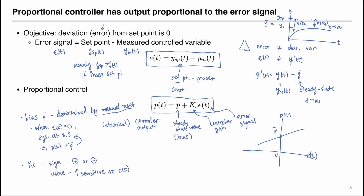We have been looking at the ideal proportional controller. However, realistically, if the error signal goes to infinity, the controller output would also go to infinity, but that is not realistic because the output is bounded by physical limits. If we redraw a more realistic proportional controller, it still has P-bar at E = 0, but there will be an upper bound called P-max where the controller is said to be saturated, and a lower bound P-min which can also be saturated due to physical limits.